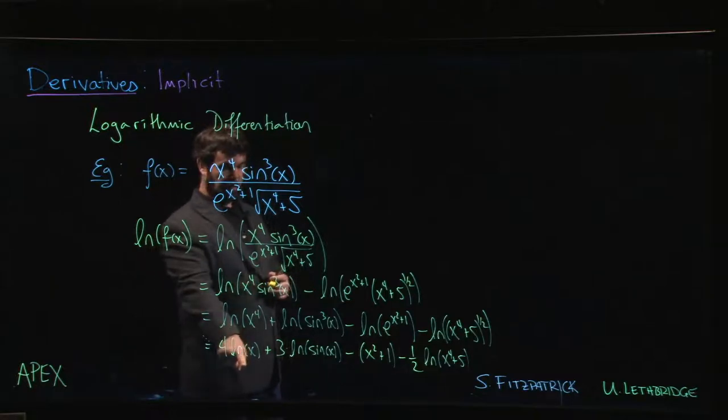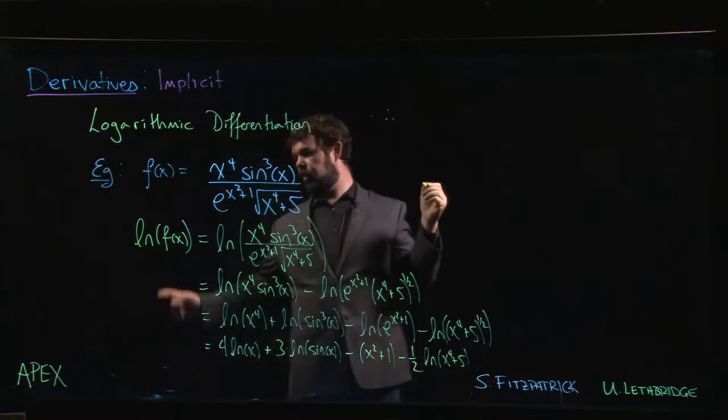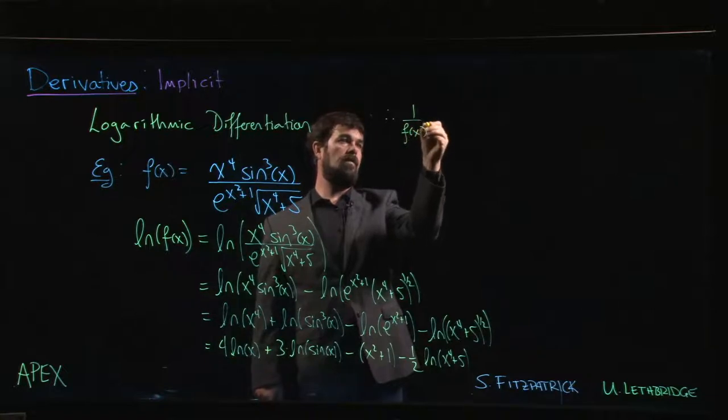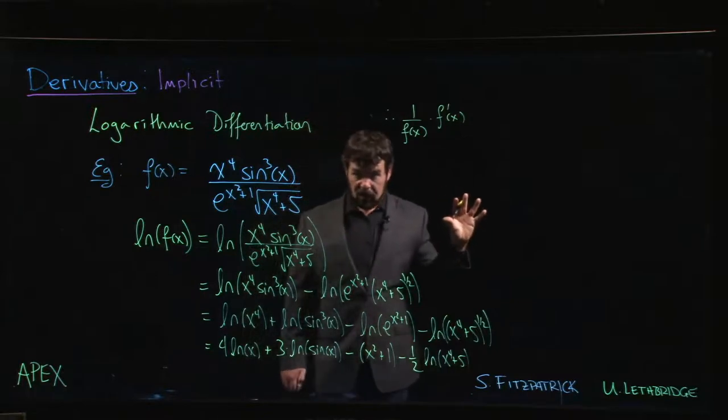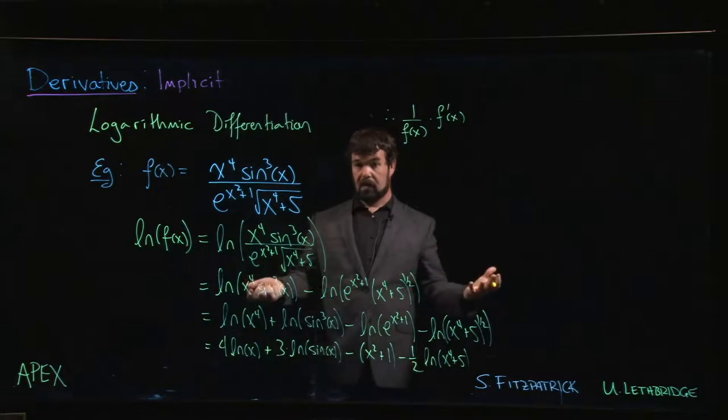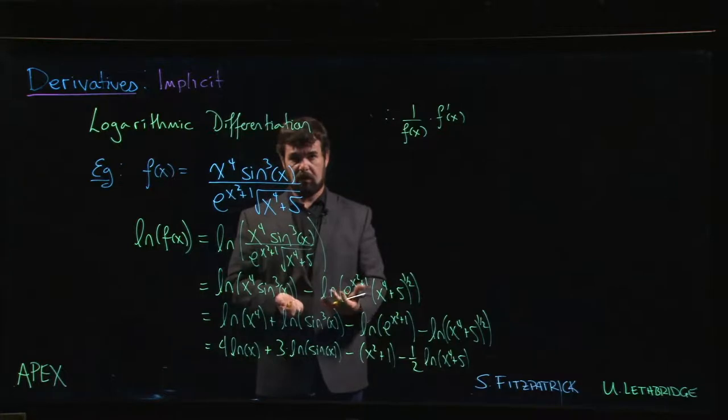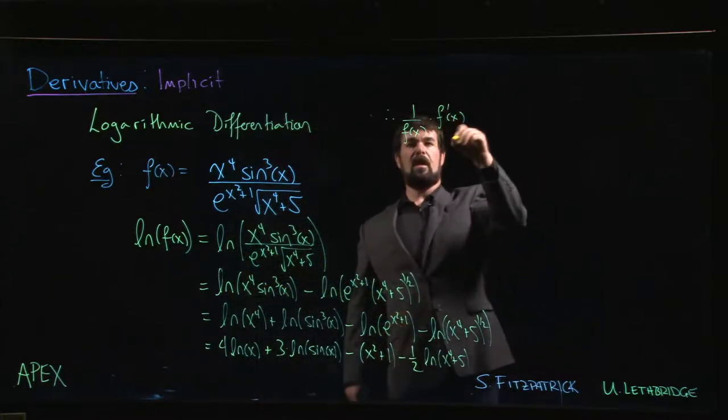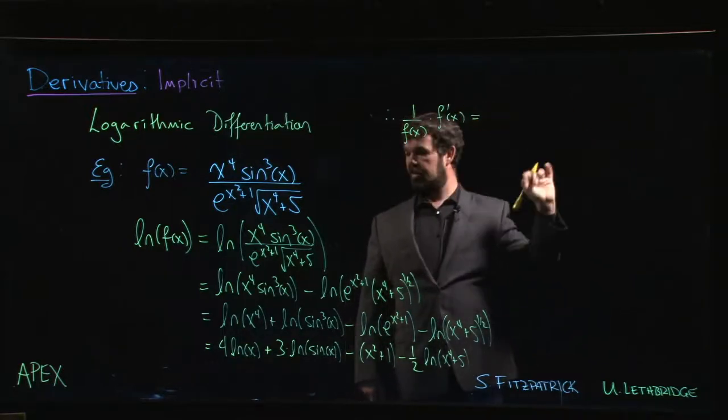What we get is on this side: chain rule says we should get one over f of x times f prime of x. And do remember that you still have to take the derivative. I've seen a lot of students who, having done all this work taking the log of both sides, say, 'Oh yeah, there we go, that's my derivative.' But no, we haven't done a derivative yet; all we've done is take the logarithm. So derivative of the left-hand side: one over f times an f prime from the chain rule. On the right-hand side, things are more straightforward.